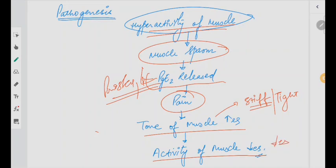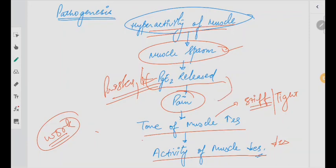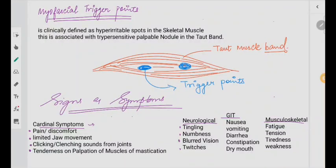For example, you are working very hard throughout the day — at the end of the day you will get tired, your muscles are going to spasm. When this happens constantly, it leads to pain. The tone of the muscle increases and the activity decreases. It is very easy to understand.